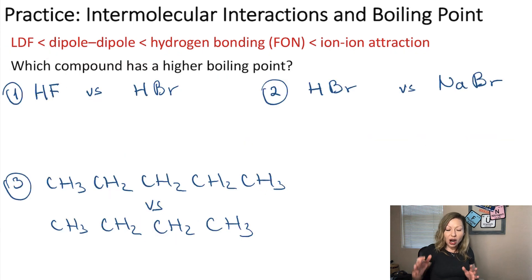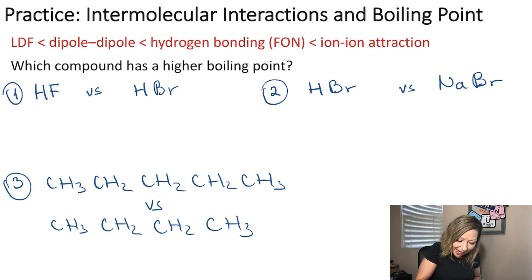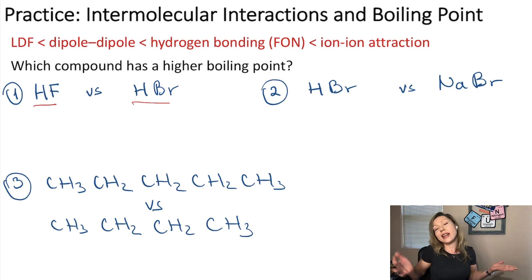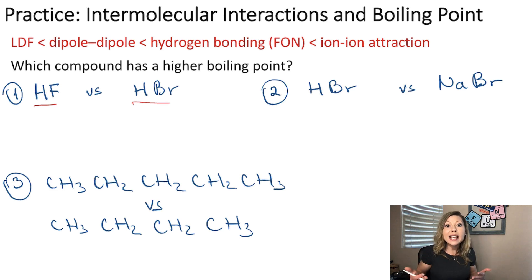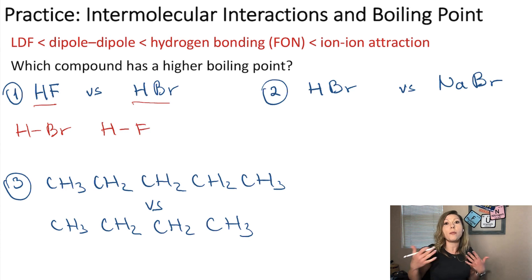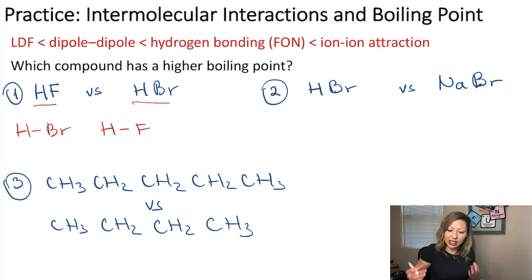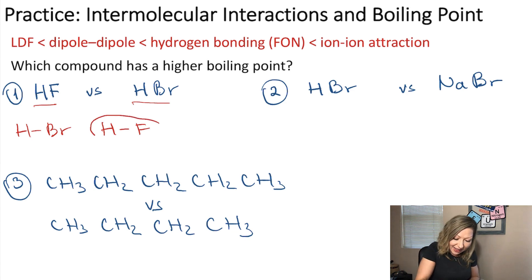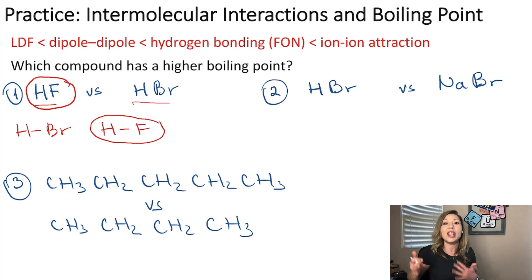Let's do more practice questions — which compound has a higher boiling point? The first pair is HF and HBr. Both have London dispersion forces and dipole-dipole interactions since both HBr and HF bonds are polar. But do we have hydrogen bonding in one of them? Yes — hydrofluoric acid has an HF bond, so it has hydrogen bonding, meaning HF has a higher boiling point compared to HBr.